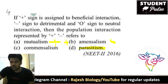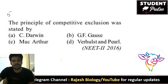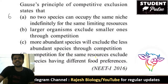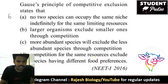Fifth question: the principle of competitive exclusion was stated by — that is an easy question — it was stated by G.F. Gause. Gause's principle of competitive exclusion states that no two species can occupy the same niche indefinitely for the same limiting resources.